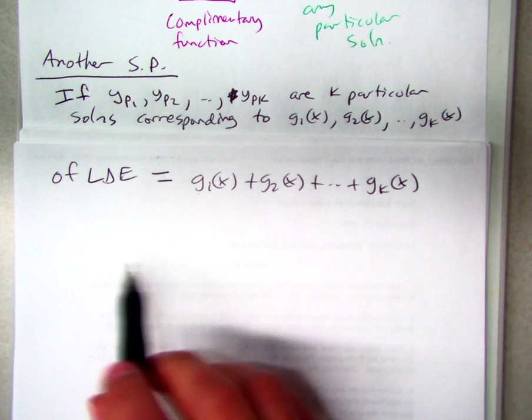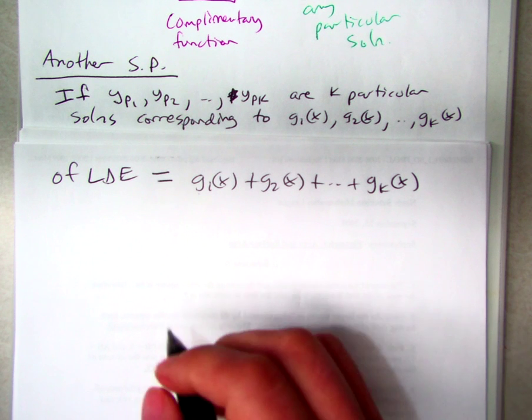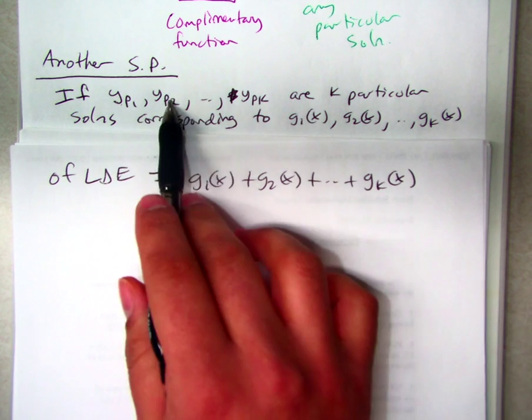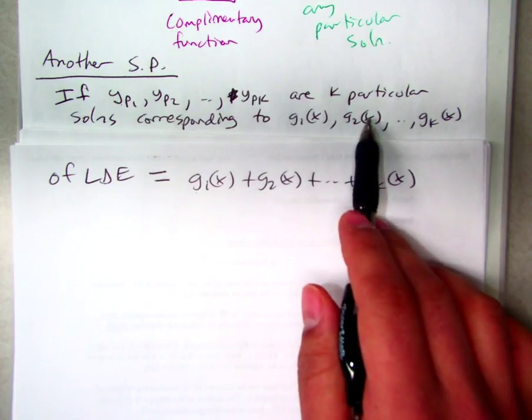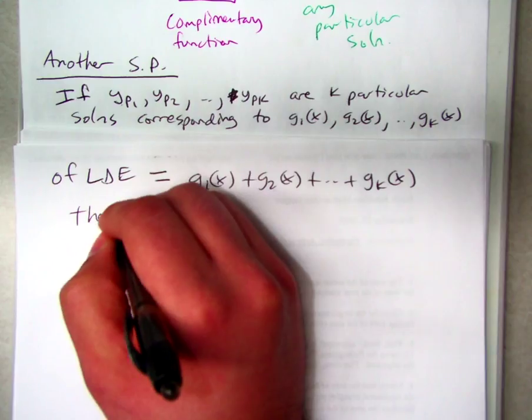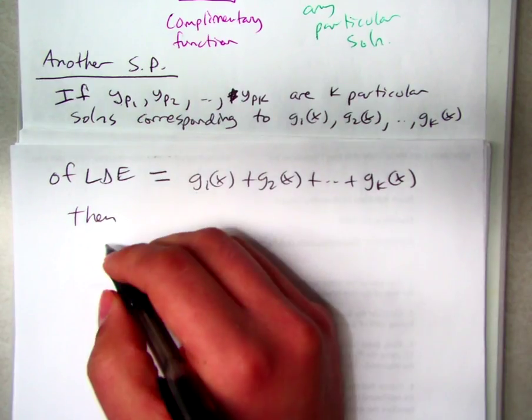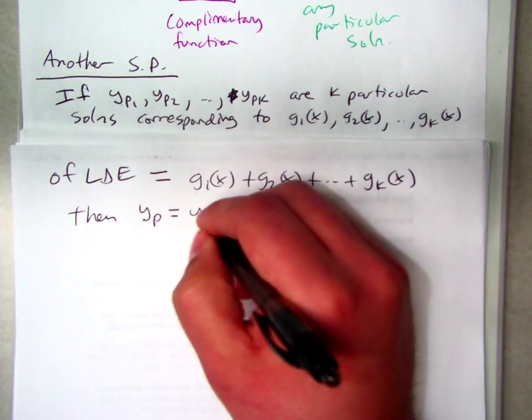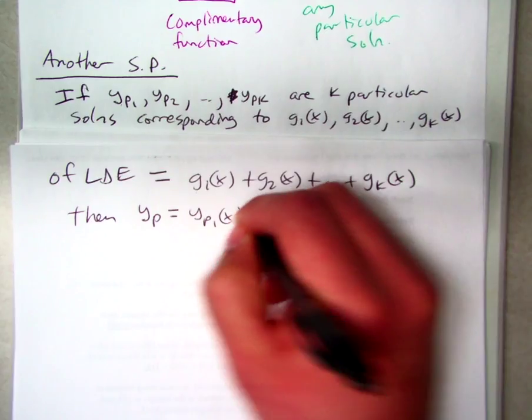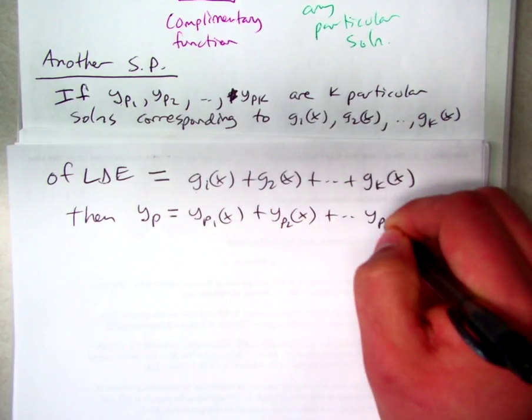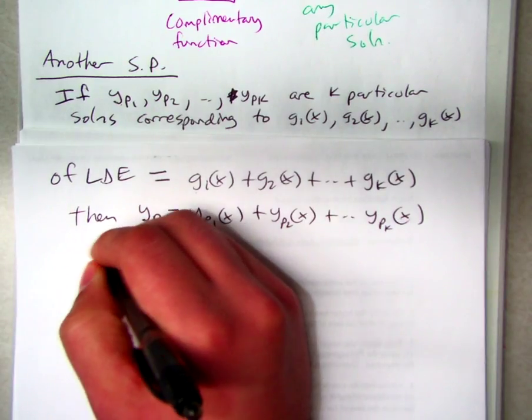Then what we're going to do is pretty much match these up. So if YP1 matches up with G1 and YP2 matches up with G2, then YP equals YP1 of X plus YP2 of X and so on is a particular solution.